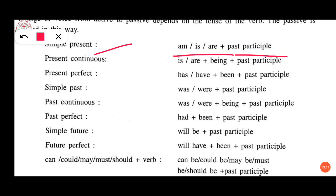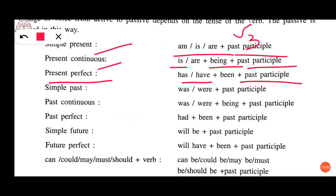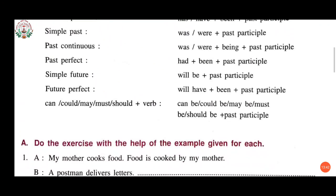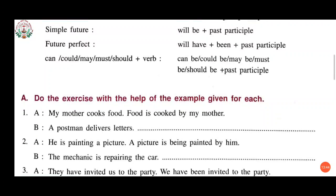For present continuous, use 'is/are + being + past participle.' For present perfect, use 'has been' or 'have been' with past participle. Similarly, rules are given for other tenses. Now let's start with the exercise.